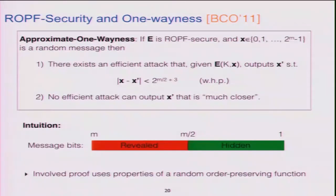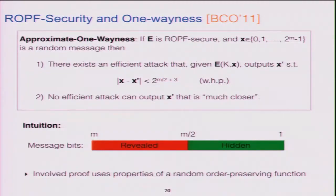To analyze this definition — once we have something indistinguishable from a random order-preserving function, what does that mean? What was later proved is something about approximate one-wayness: if you pick a random domain point x, encrypt it, and show someone the ciphertext, they can extract about the left half, the most significant bits of x. Numerically, they can estimate x to within about square root of the domain accuracy. But a positive result was also proved: no efficient attacker can do much better — these bits on the right are in some sense strongly protected, for random x.